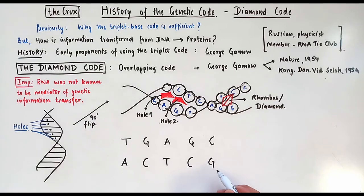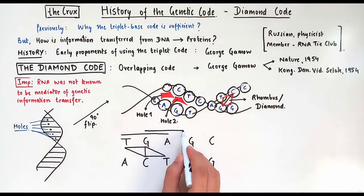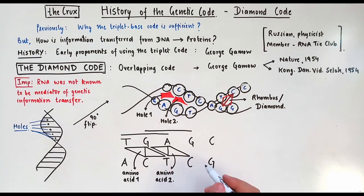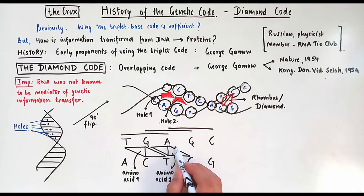So the first diamond in this schematic is formed by the TGA, and that codes for a specific amino acid. Then because this is an overlapping code, the most immediate diamond is formed by two overlapping plus one new base. So that is GAG codon, which specifies another amino acid. And then finally, AGC specifies the last amino acid.